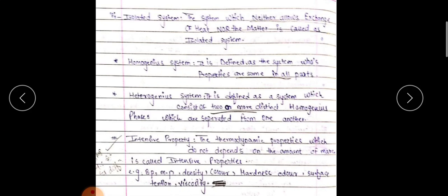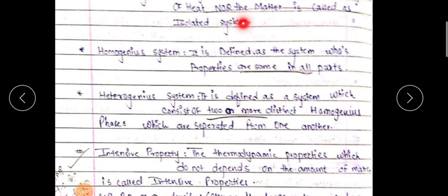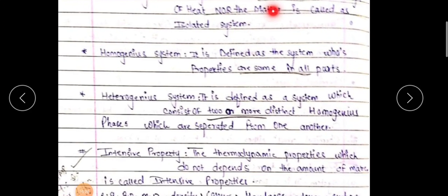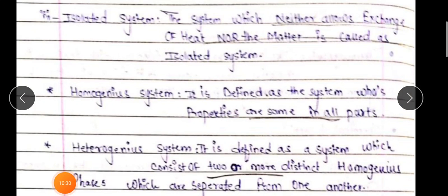Homogeneous system — it is defined as a system whose properties are the same in all parts. Heterogeneous system — it is defined as a system which consists of two or more distinct homogeneous phases which are separated from one another. These are a few terms; remaining terms we will see in the next lecture. Please see the syllabus and try to understand these terms.